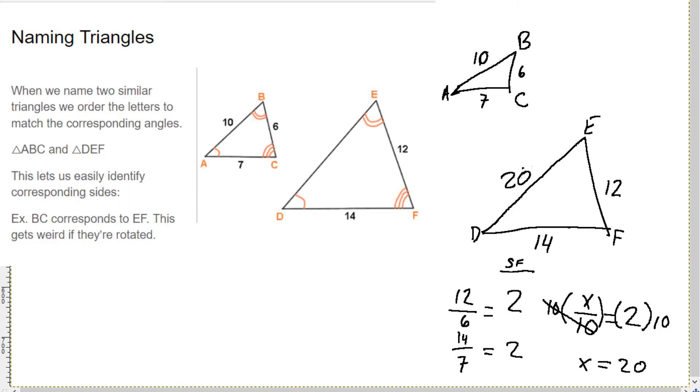The last thing that I want to talk about is when we're naming triangles and we name similar triangles, we need to order the letters so that they show up in the right order for the corresponding sides. Okay. So, DE corresponds to AB. Okay.